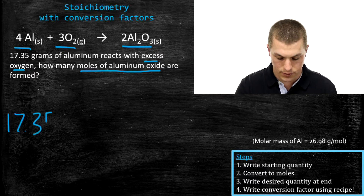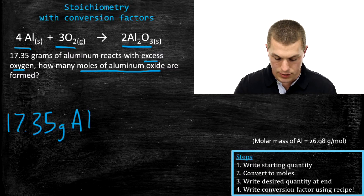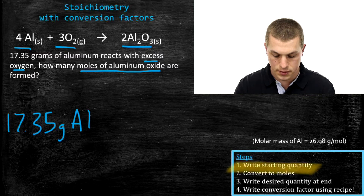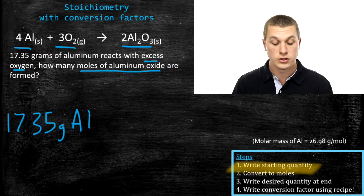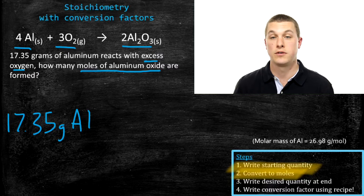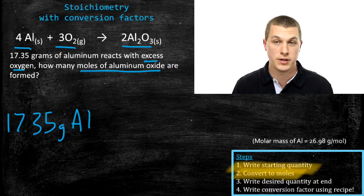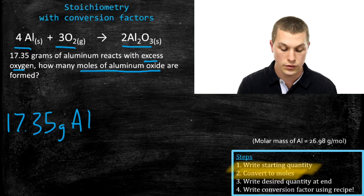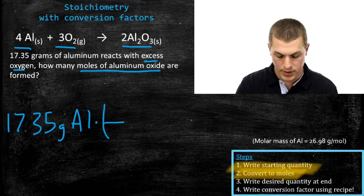We start by writing out our starting quantity: 17.35 grams of aluminum. That's our very first step — writing out our starting quantity. We're always going to convert to moles, because our chemical recipe is in terms of moles, not grams. So if we don't have moles initially, we convert to moles. The way we convert from grams to moles is with the molar mass of aluminum.